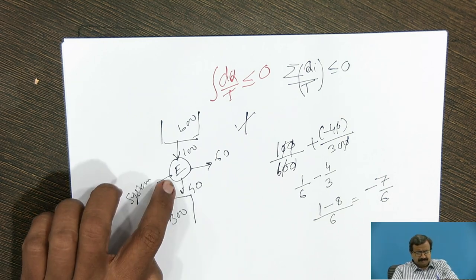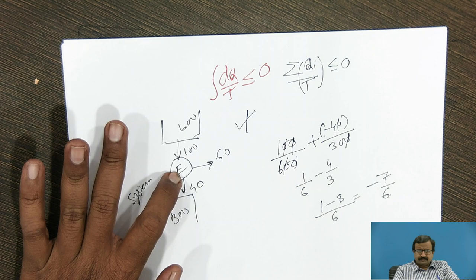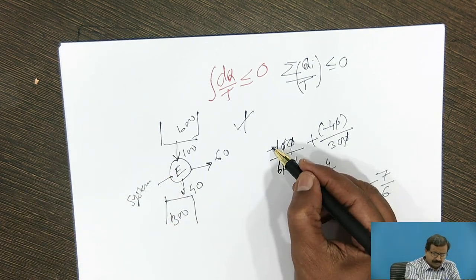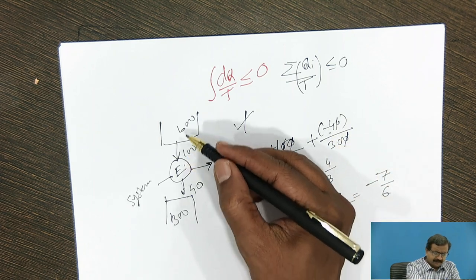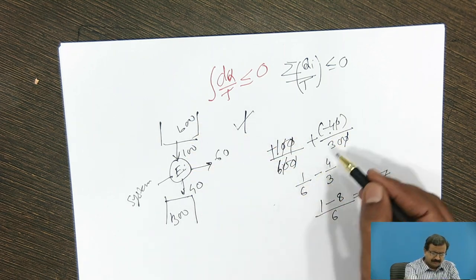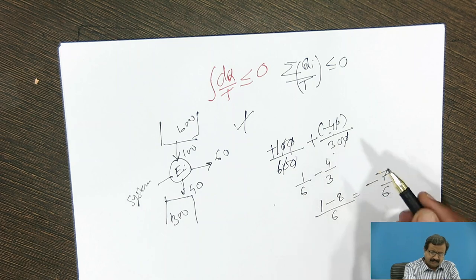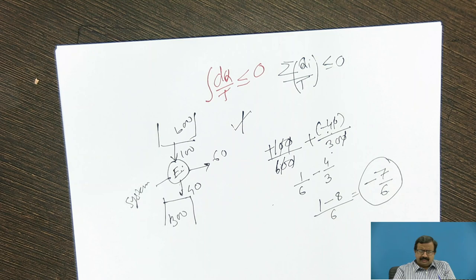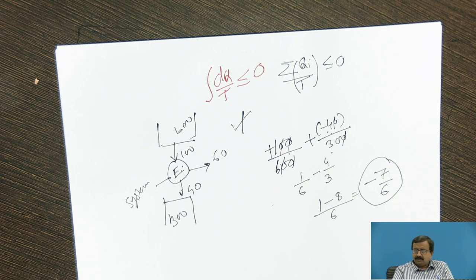Now for the system that I have studied, heat supplied and heat rejected. So heat supplied is positive, heat rejected is negative. The temperature at which it is supplied is 600. The temperature at which it is rejected is 300. And the answer I am getting is minus 7 by 6. Now the question is whether this system will prove the Clausius inequality or not? That is our question. Or whether we are going somewhere wrong in the calculations? Let us check it.